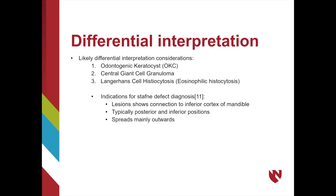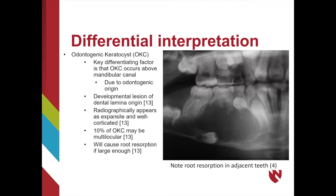Now we will look at how to better differentiate between SBD and radiographically similar lesions. OKC is a developmental lesion originating from dental lamina. Radiographically, OKC appears expansile and well-corticated. A key distinguishing feature between OKC and Staphne defect is the location of the lesion. OKC lesions will be located above the mandibular canal due to the odontogenic origin, whereas Staphne defects occur below the mandibular canal because it is a non-odontogenic lesion. Root resorption and the possibility of multilocular lesions are also seen in OKC lesions.